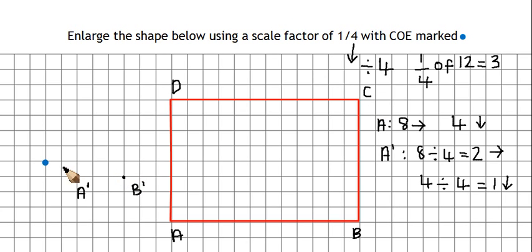Same again now for C and D. C is 20 right and 4 up. So a quarter of 20 is 5. 1, 2, 3, 4, 5 right. A quarter of 4 is 1. 1 up. My new C is there.